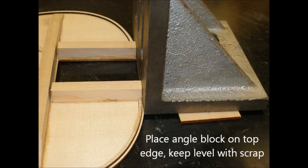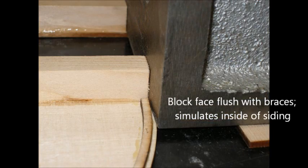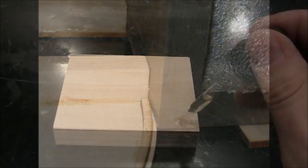The angle iron, the cast iron block, sits on top of the ledge there and also on a scrap piece to keep it level. You see we have it pushed up all the way against the kerfing and those braces.